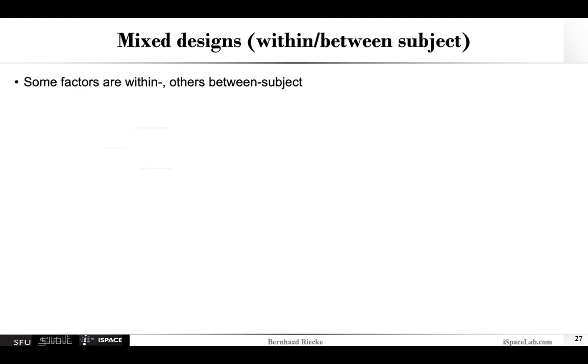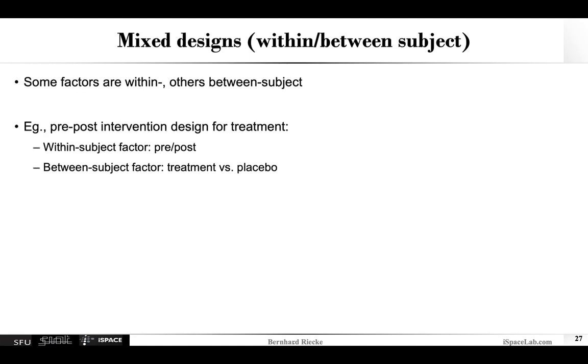So for example, a very simple one would be you have a pre-post intervention design for a treatment. So you have the within-subject factor would be pre or post or different timelines, for example. Between-subject factor, it could be treatment or placebo. And this can become arbitrarily complex. So ideally, what you try and do in mixed designs is to combine the advantages of the different methods and try to circumvent some of the possible drawbacks.